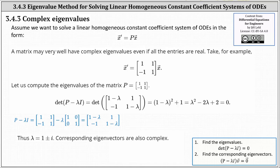Welcome to a lesson on how to solve a linear homogeneous constant coefficient system of ODEs in the form of X prime equals P times X, using the eigenvalue method when the matrix P is a two-by-two matrix that has complex eigenvalues.